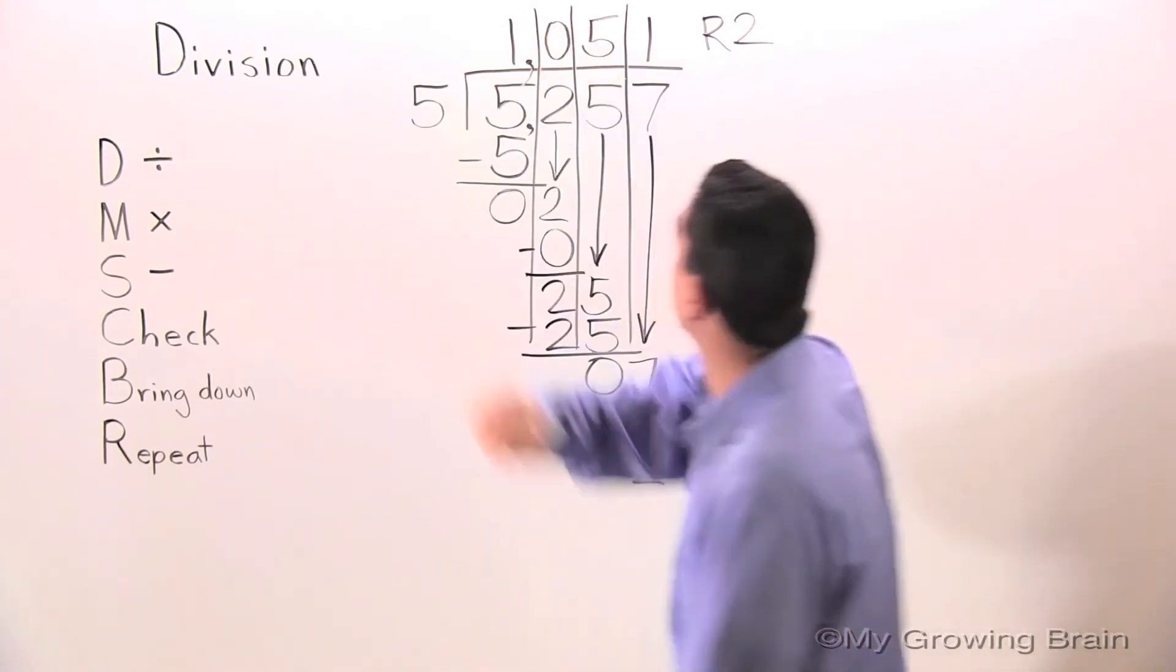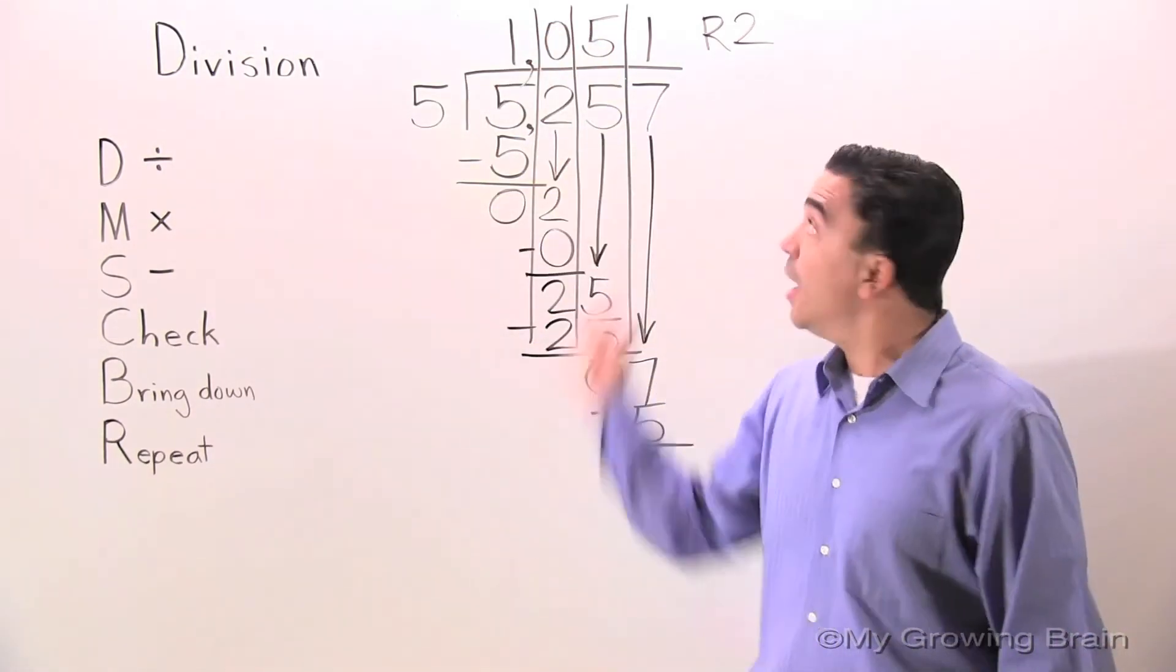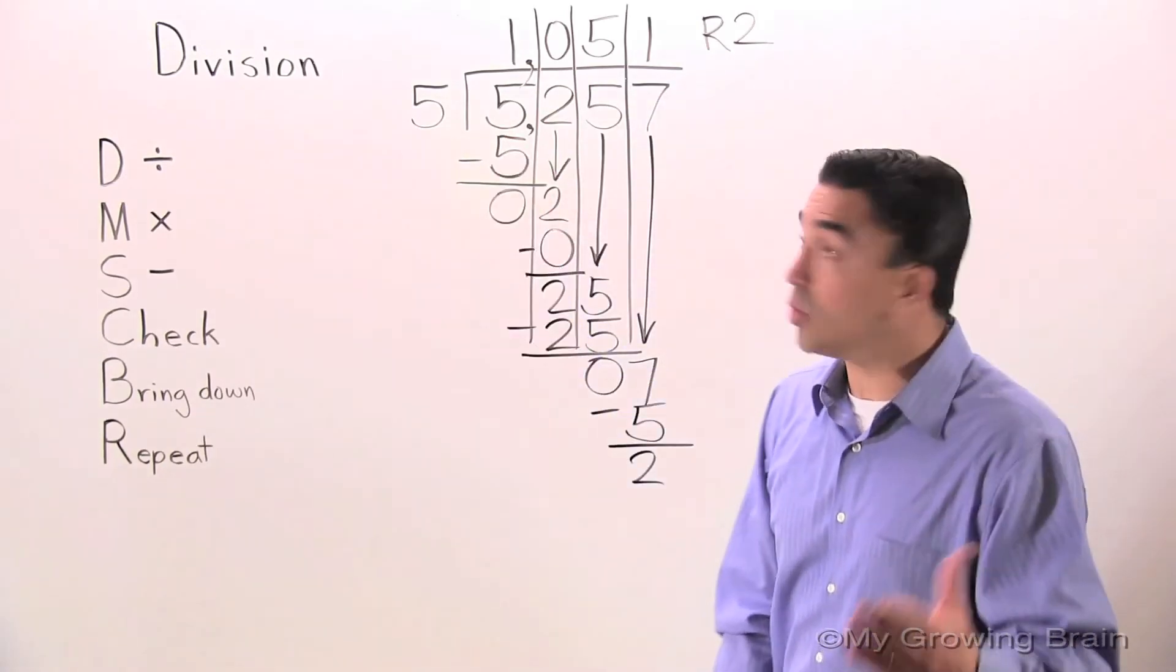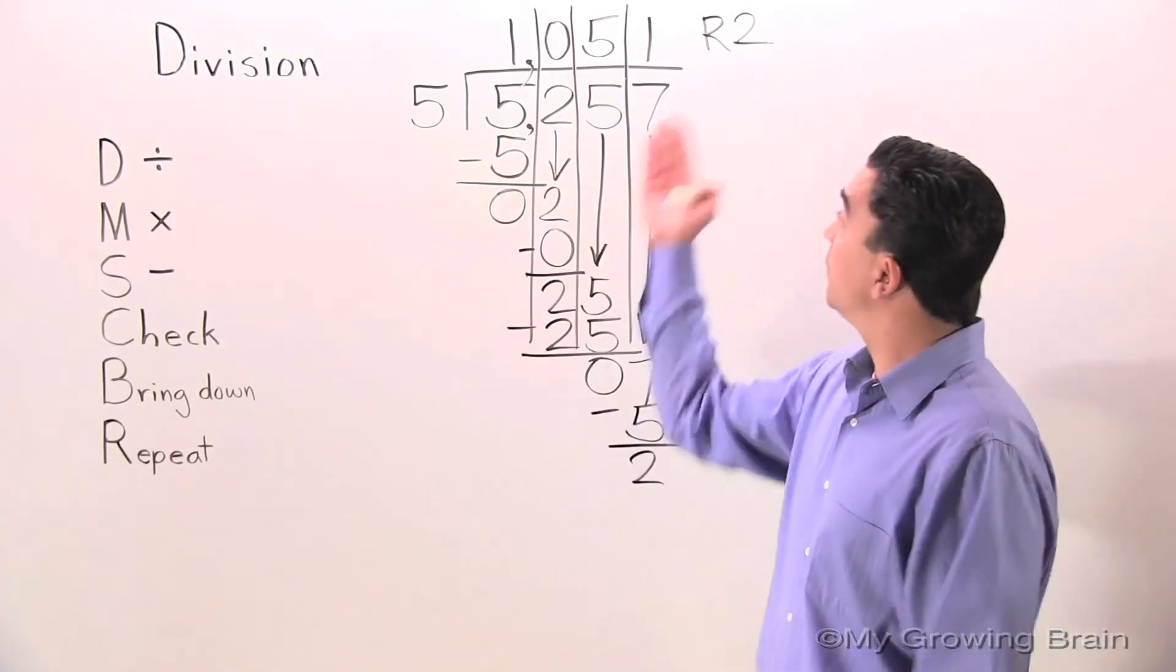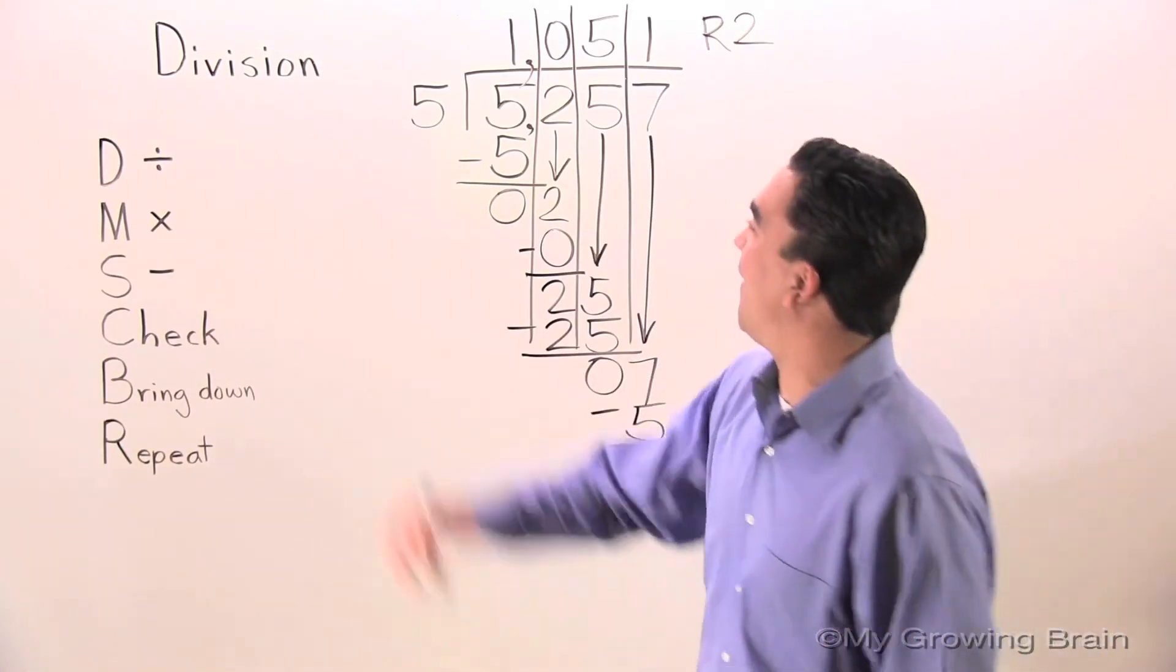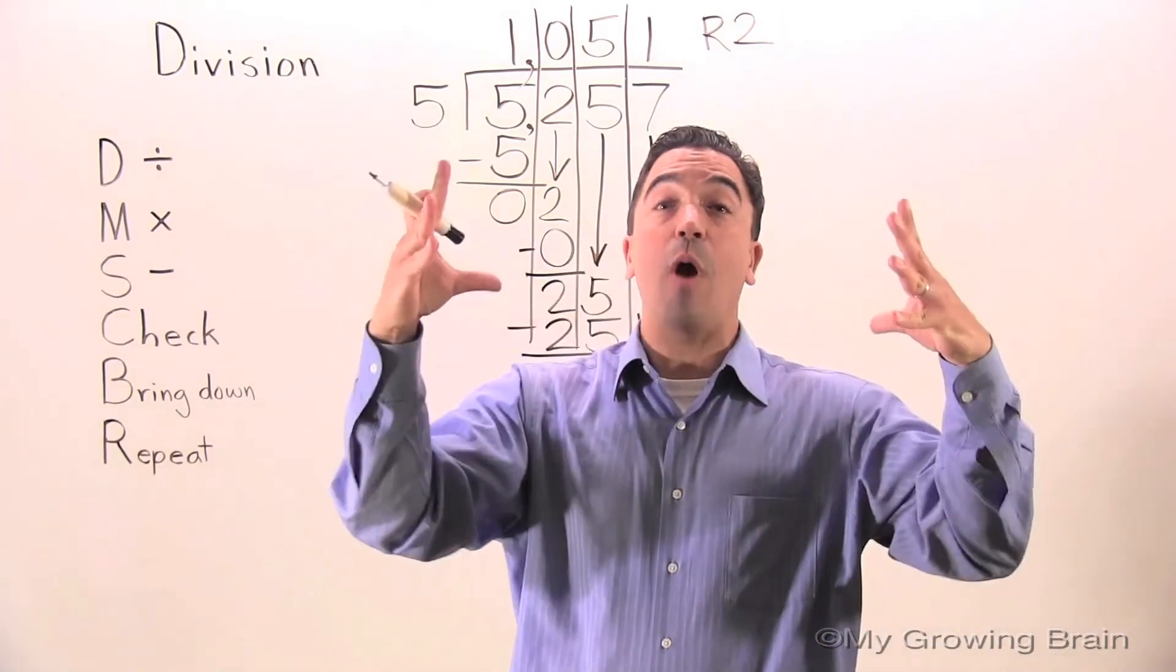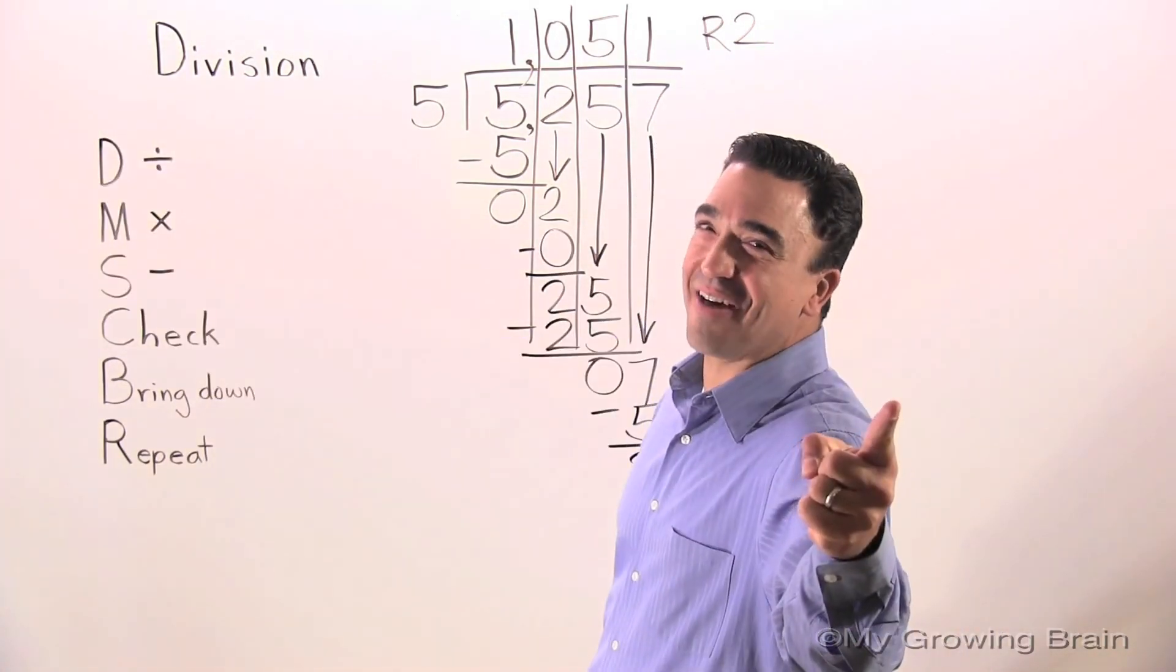So, 5,257 divided by 5 equals 1,051 remainder 2. This concludes our lesson on Division. Coach Mike at My Growing Brain. Challenge Yourself.